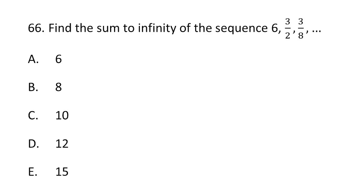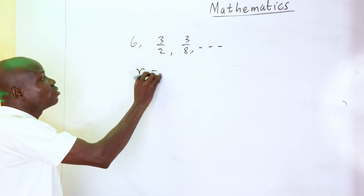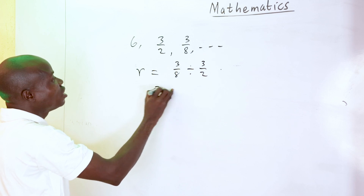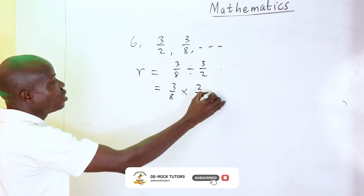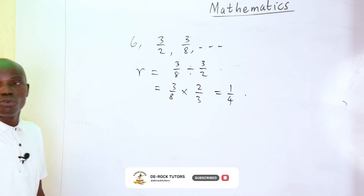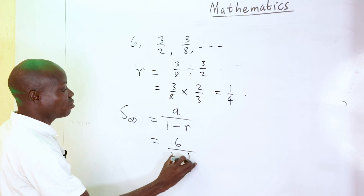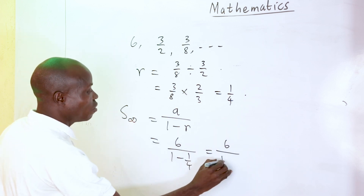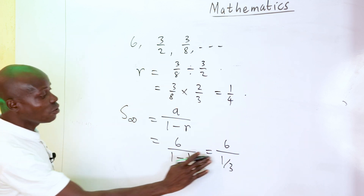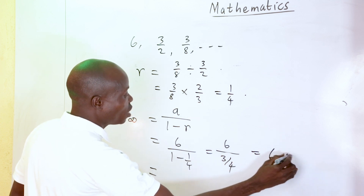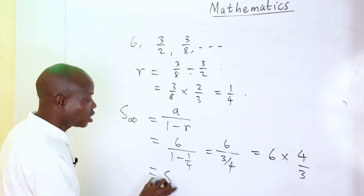Question 66: find the sum to infinity of the series 6, 3/2, 3/8. The common ratio is (3/8) divided by (3/2), which equals 1/4. Sum to infinity is A over (1 minus R), giving 6 over (1 minus 1/4), which is 6 over (3/4), equal to 8. The correct option is B.